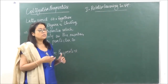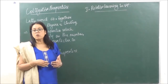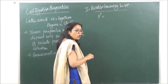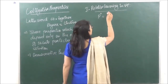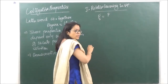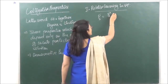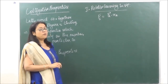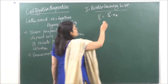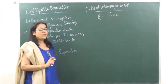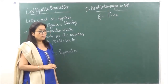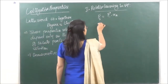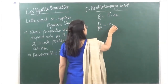From Raoult's Law, if we put a non-volatile solute in any solvent, the vapor pressure of the solution (Ps) depends only on the pressure of the pure solvent (P naught). Since the solute B is non-volatile and forms no vapors, Ps = P naught × xA. Rearranging, we get Ps / P naught = xA.